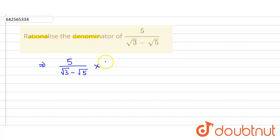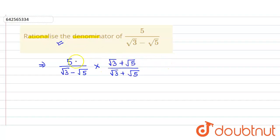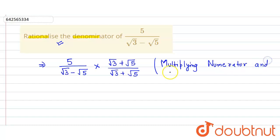So here we multiply the numerator and denominator by root 3 plus root 5. We multiply numerator and denominator by root 3 plus root 5 so that we can rationalize the denominator and get a rational number in the denominator.